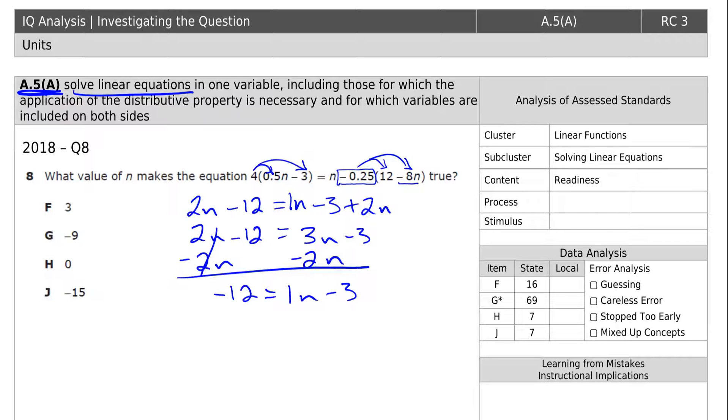The last thing we need to do, get the n on its own, is get rid of this 3. Currently that 3 is subtracting from the n, so to do the opposite, we add plus 3, plus 3. n is equal to negative 12 plus 3 is negative 9. The answer is G.